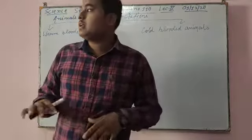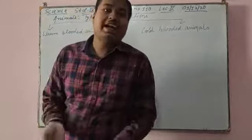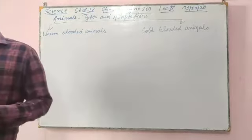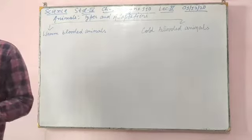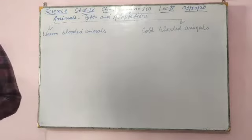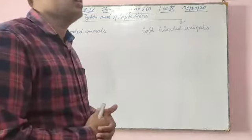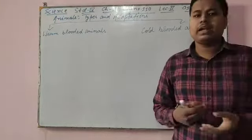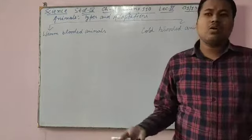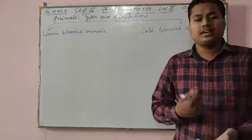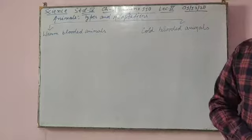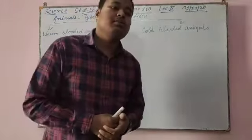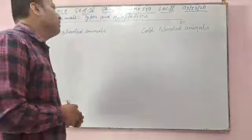If there is any temperature change in our surroundings, we adapt. Warm-blooded animals maintain a constant body temperature at all times. If there is a change in their surroundings, they will adapt. Cows and other mammals are examples — they adapt according to their surroundings. These animals are called warm-blooded animals.